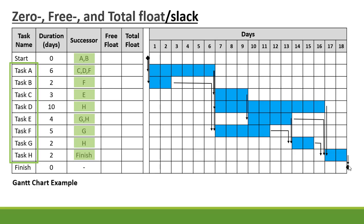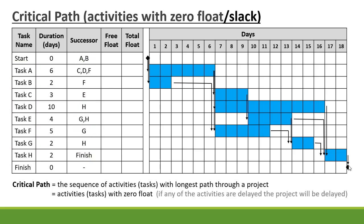Now let's have a look at the critical path. The critical path is a sequence of activities with the longest path through a project, and the activities on the critical path have zero float. So if any of the activities are delayed on the critical path, the project will be delayed.